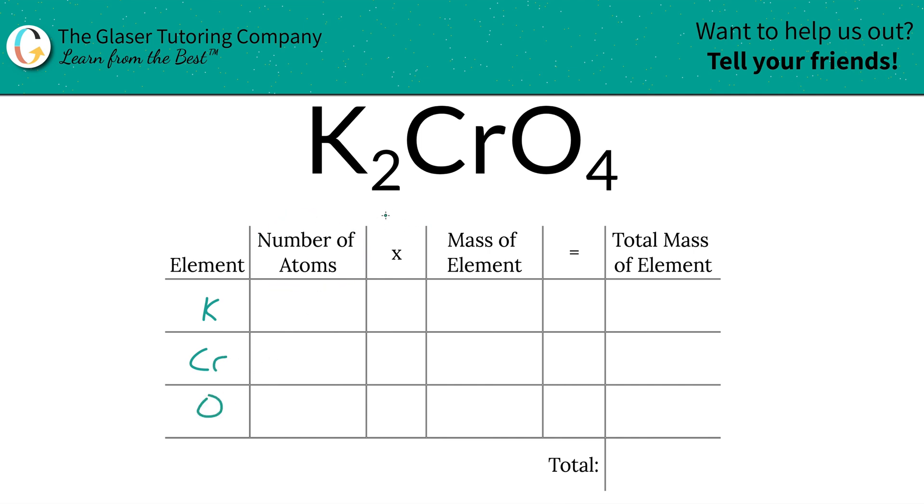Next is then to identify the number of atoms, that's where the subscripts come into play. So at the bottom of potassium there is a 2, so that means we've got 2 atoms. Chromium, there's only 1. And oxygen, there's going to be 4.